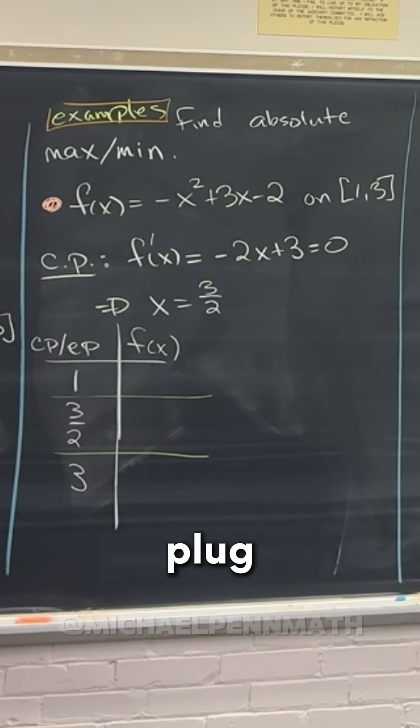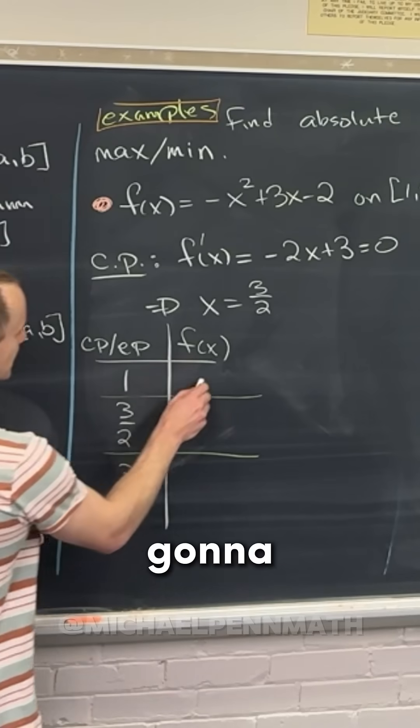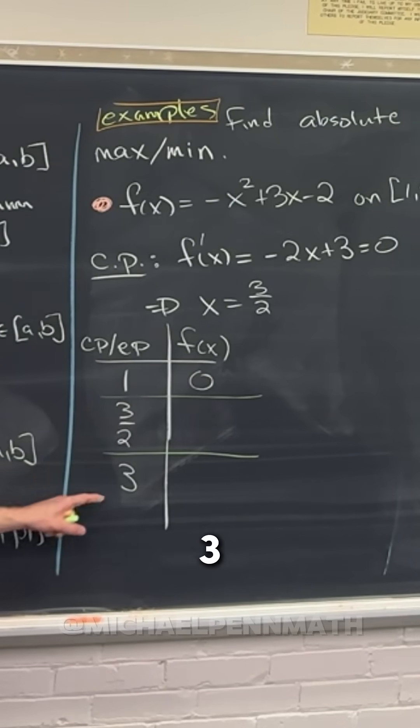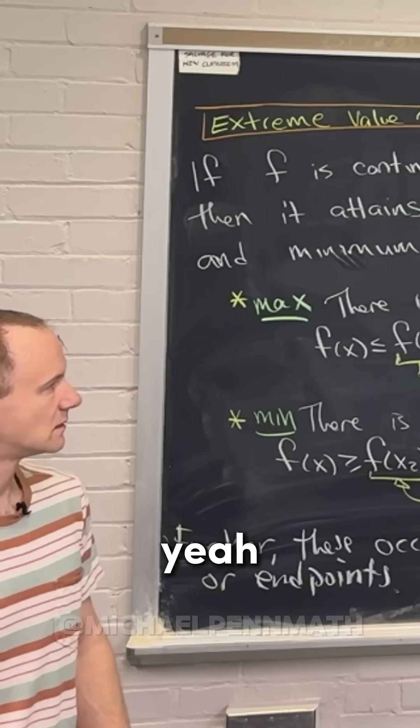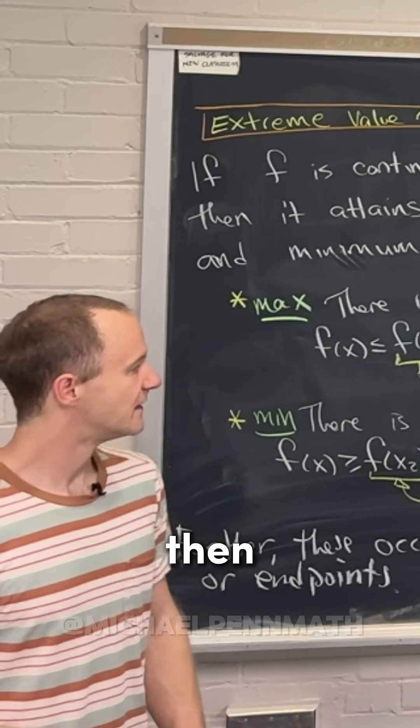And then let's see, if we plug 1 into the function, what do we get? So we get 0, right? So this is going to be 0. If we plug 3 into the function, what are we going to get? So we got negative 9 plus 9 minus 2. We have negative 2. Is that correct? Yeah, that seems right.